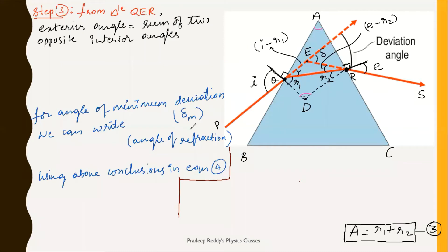We have equation three: A equals r1 plus r2. Now, taking triangle QER, we can apply the exterior angle theorem: the exterior angle equals the sum of the two opposite interior angles. The exterior angle is delta, which equals i minus r1 plus e minus r2.